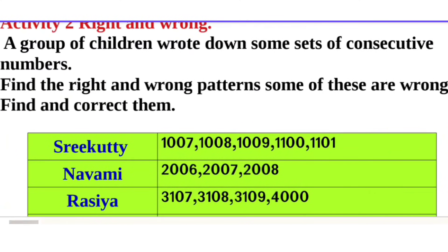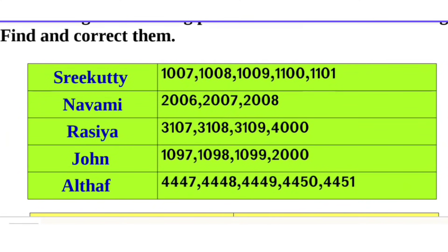Activity: A group of children has some sets of consecutive numbers. Some of these patterns are wrong. We have to find the correct ones and correct the wrong ones.